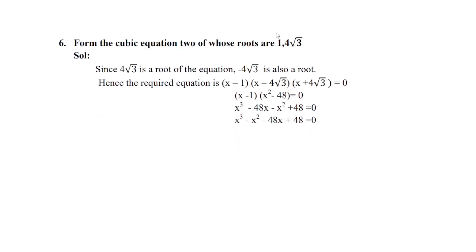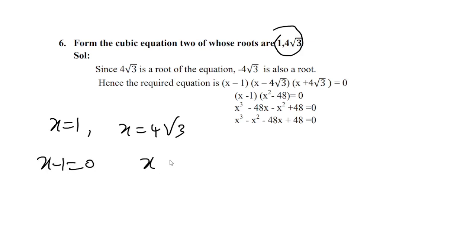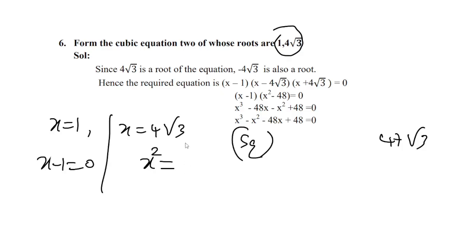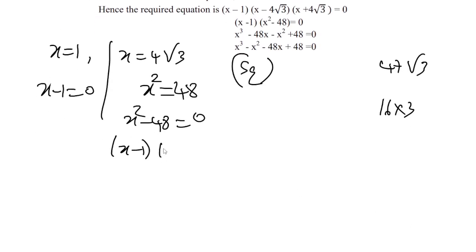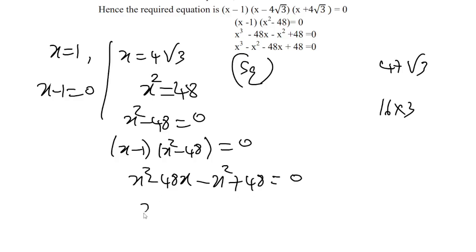Next, another cubic equation: x equals 1 and x equals 4√3. Very simple: x minus 1 equals 0. For x equals 4√3, squaring gives x² equals 16 × 3 equals 48, so x² minus 48 equals 0. The cubic becomes: x³ minus 48x minus x² + 48 equals 0, rearranged as x³ minus x² minus 48x plus 48 equals 0.